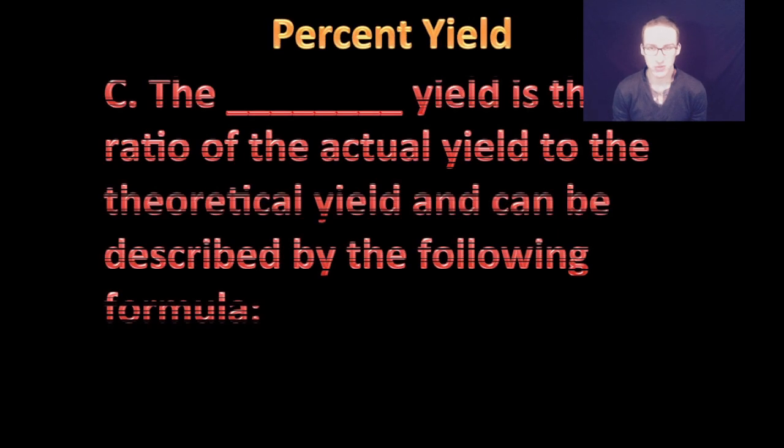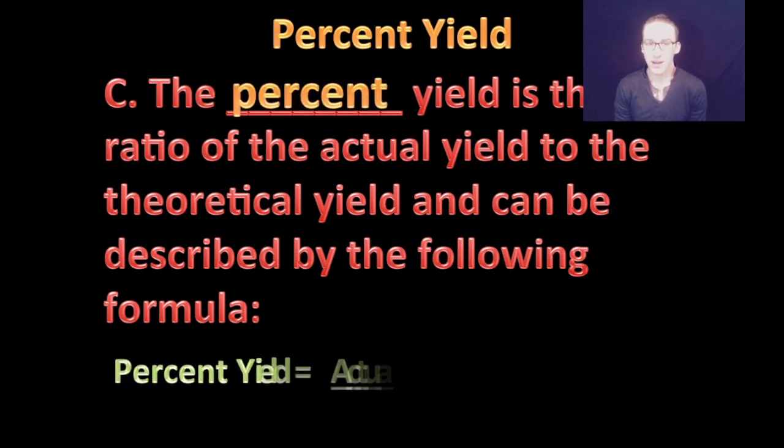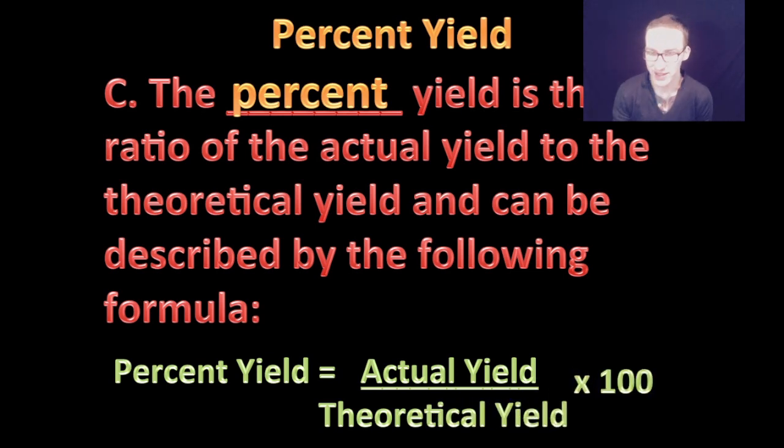But in science, we don't care. All we need to do is report what our percent yield is. In other words, what is the relationship between what we actually got, what we actually yielded in the lab to what theoretically we should have gotten? And again, that is simply known as our percent yield.